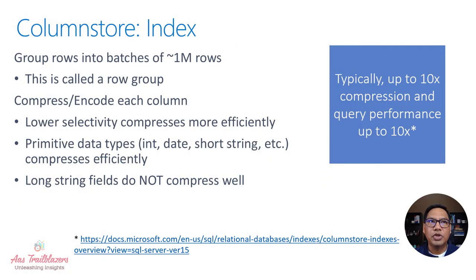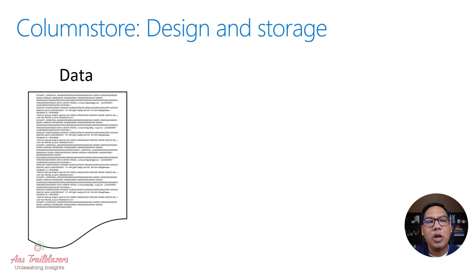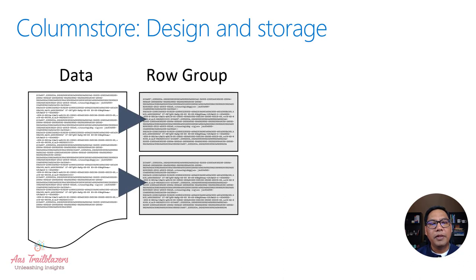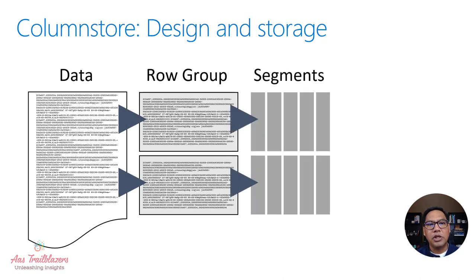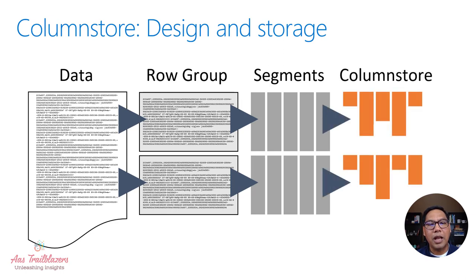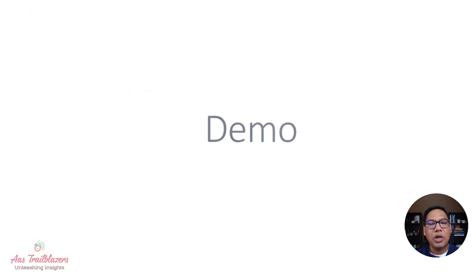Column store indexes are a standard for storing and querying large data warehousing fact tables. A column store index typically provides up to 10x compression and up to 10x query performance. In terms of data storage, whatever data is inserted into a table with a column store index first gets divided horizontally into row groups — ideally 1 million rows per row group. Then for each column there is a column segment, and for each column segment, compression gets applied, and the column stores are generated and stored as part of the table structure.